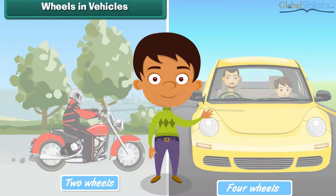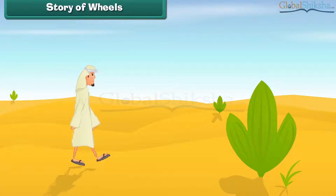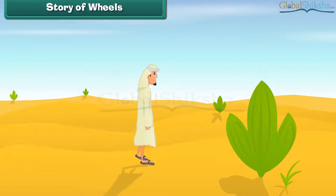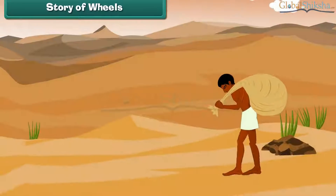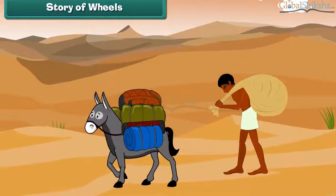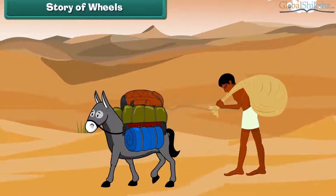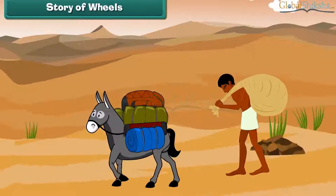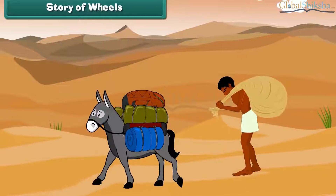Let us learn more about wheels — the story of wheels. Long, long ago, when there were no means of transport, man covered distances on foot. He carried his goods on his back or on the backs of domesticated animals like donkeys and buffalos. But it was difficult to carry loads on animals over long distances.